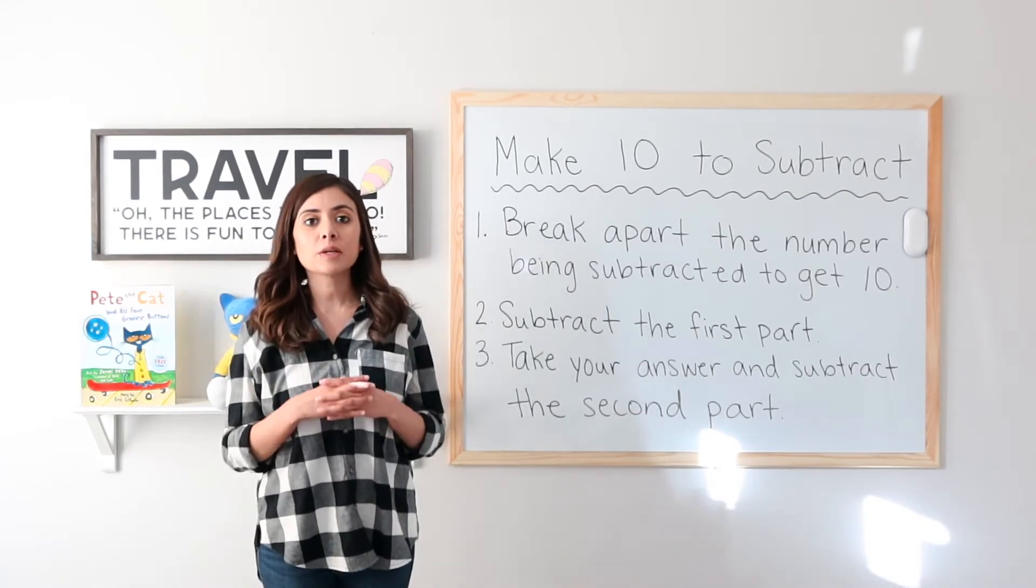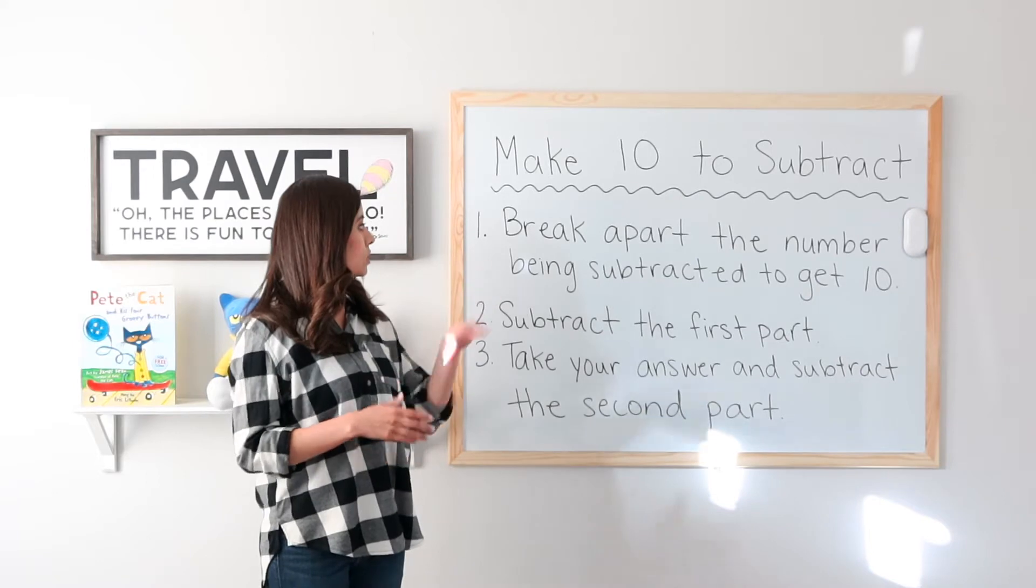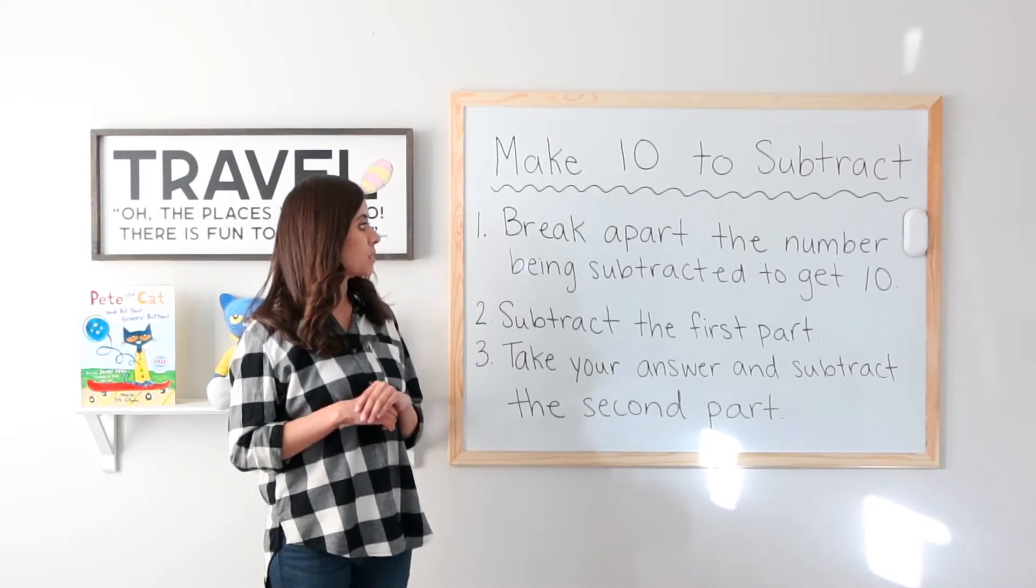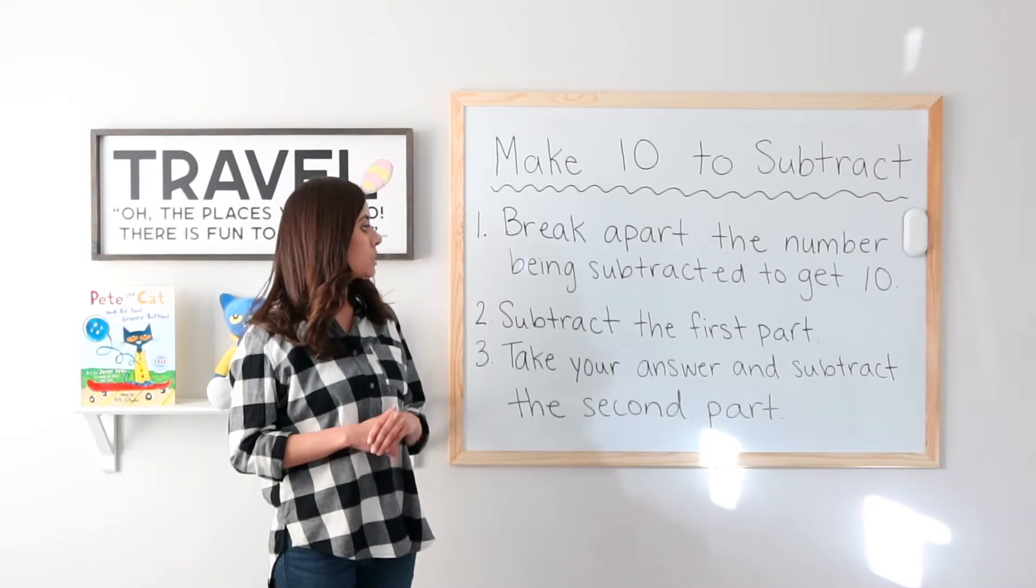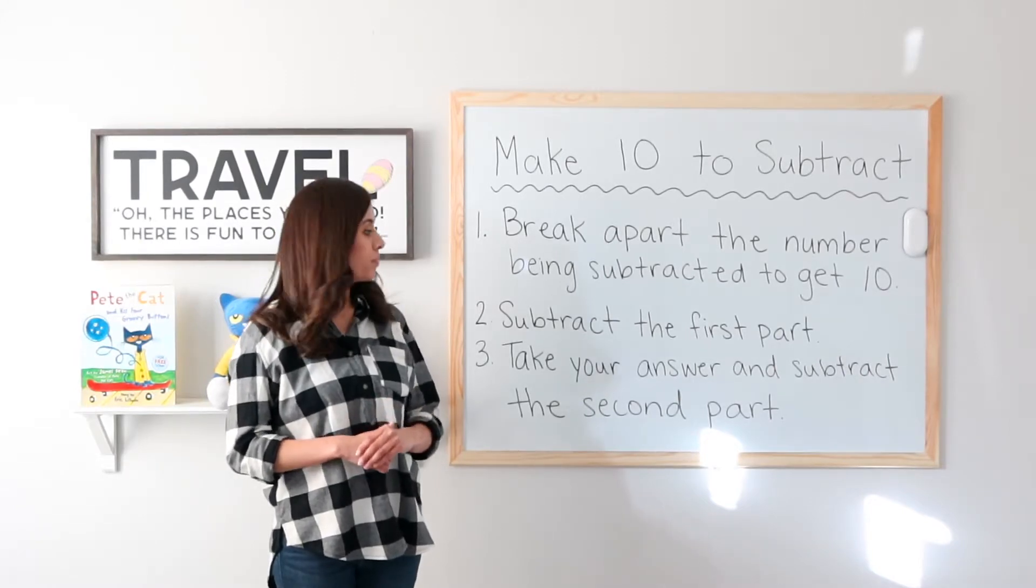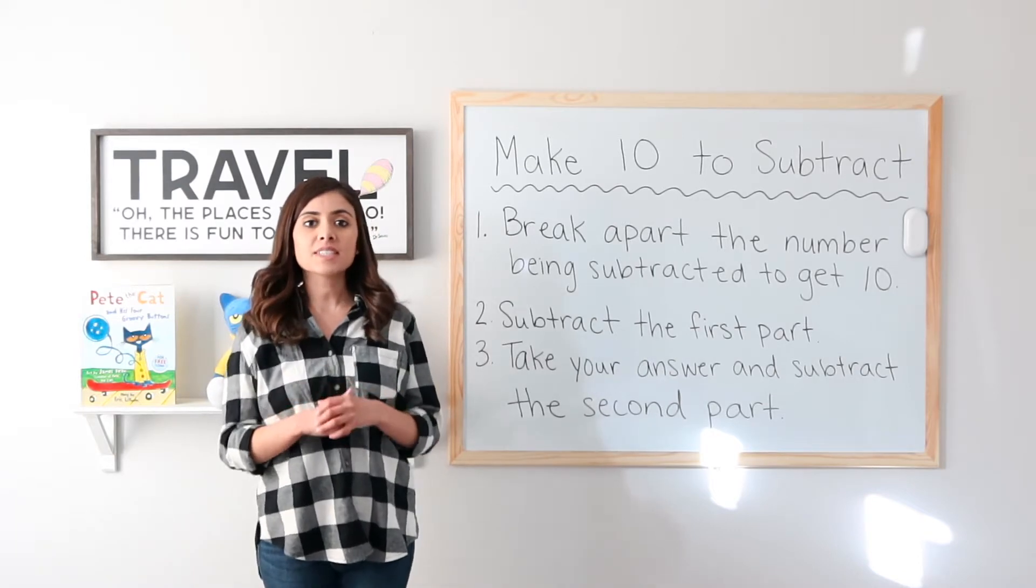So the examples we are about to work through require a series of steps. First, we will break apart the number being subtracted to get 10. Second, we will subtract the first part. And third, we will take our answer and subtract the second part.